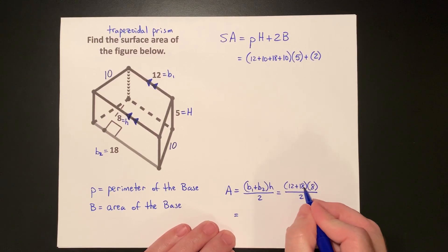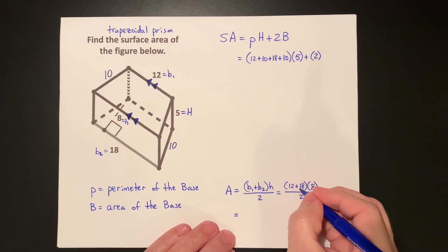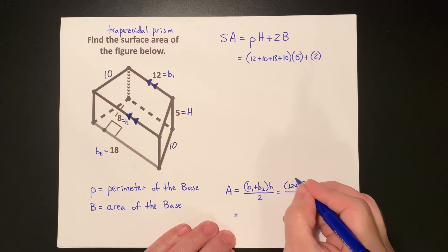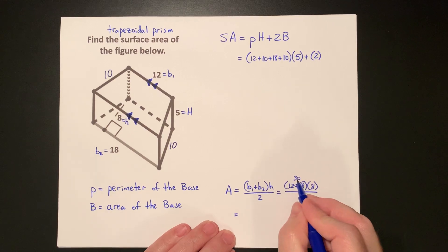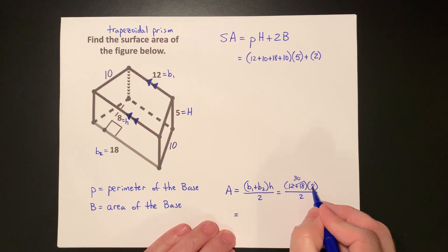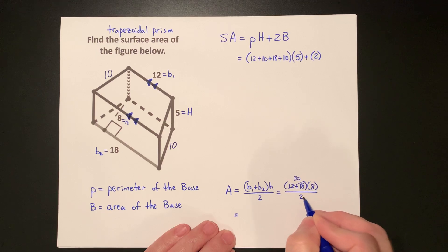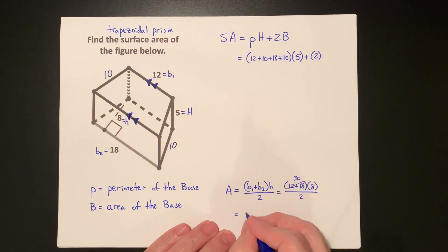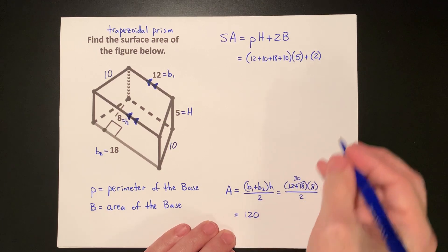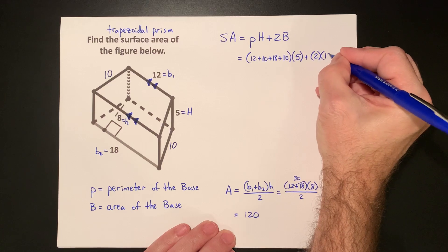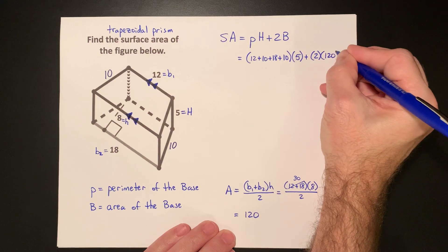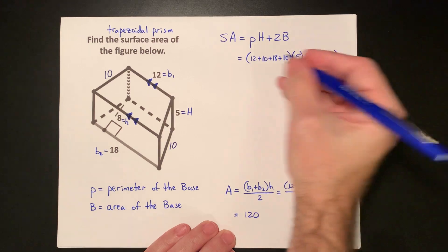12 plus 18 is 30. 30 times 8 is 240. 240 divided by 2 is 120. And that value goes into our formula.